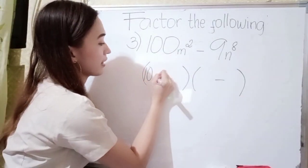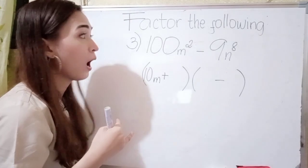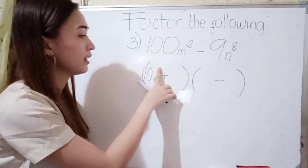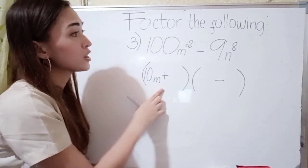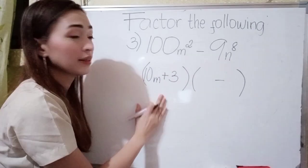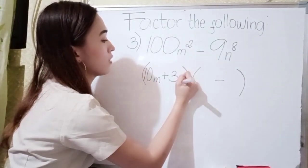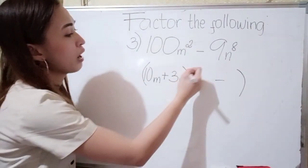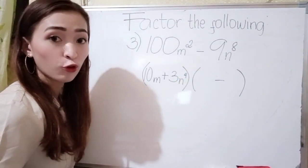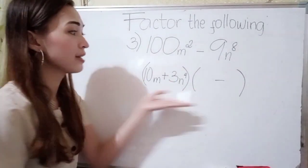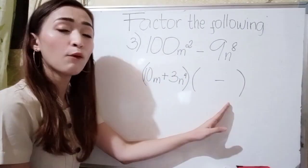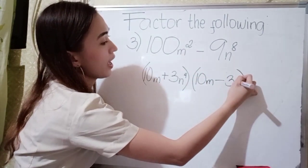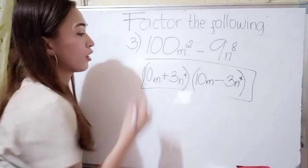Next, we have m here so just write m. For the exponent, divide it by 2. So 2 divided by 2 is 1, so we don't need to write 1. What is the square root of 9? It's 3, because 3 times 3 is 9. Now we have n raised to the 8th power. Divide 8 by 2, that is 4, so our exponent for n is 4. Our final answer is 10m plus 3n to the 4th power, times 10m minus 3n to the 4th power.